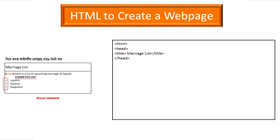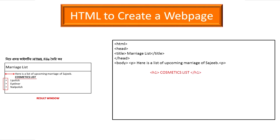We have a paragraph in the body. We need to write a paragraph with a list of an upcoming marriage of Sajib. This is a single sentence. We have to write the list with a heading — the cosmetics list.